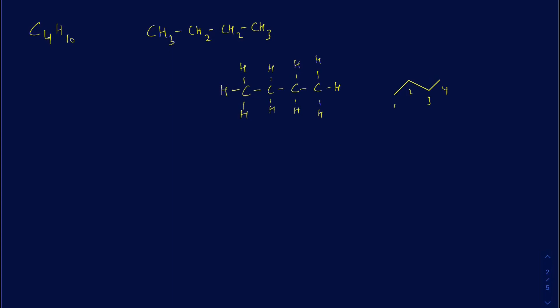Suppose I have C4H8, which follows the CnH2n formula, so it could be a cycloalkane or an alkene. Suppose it's an alkene — that means there is going to be a double bond. The condensed structure would be CH3, then CH double bond CH, then CH3. You must have a total of four bonds around the carbon, and when you place a double bond, you reduce the number of hydrogens around those carbons.